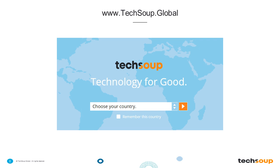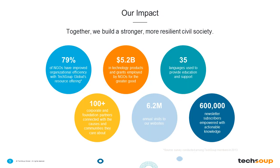I'm looking in the chat box — we're here from all over the country. We have a few folks from Tennessee. TechSoup has helped organizations get more than $5.2 billion in technology products and grants to NGOs around the world, and these technology products and grants come from more than 100 corporate and foundation partners.